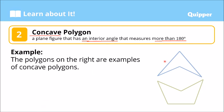We have here examples of concave polygons. Take note that we have interior angles that are less than 180 — this one, this one, and this one. But take note, this angle right here is greater than 180 degrees. Even though it's just one angle, we consider this polygon as a concave polygon.